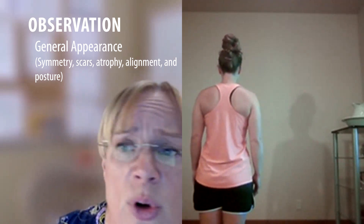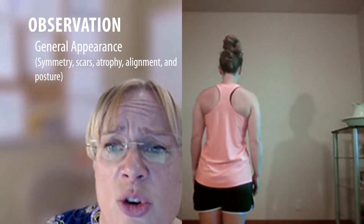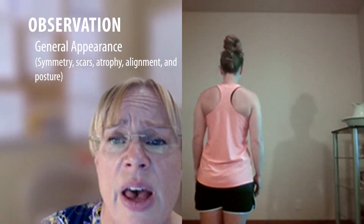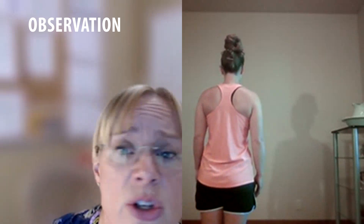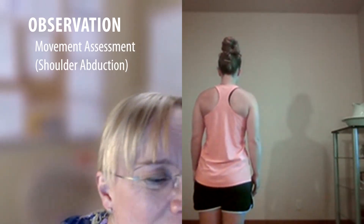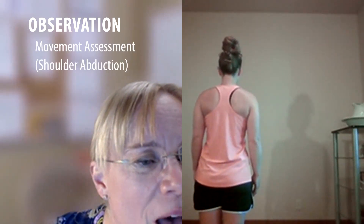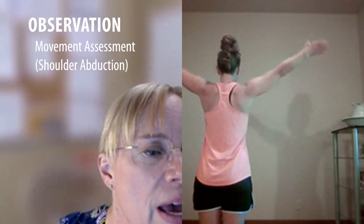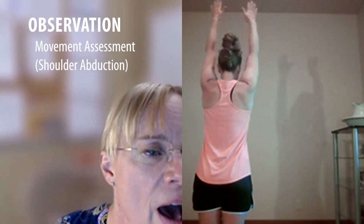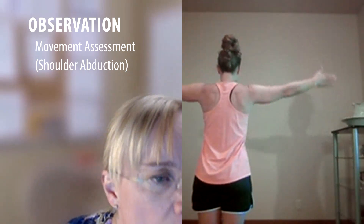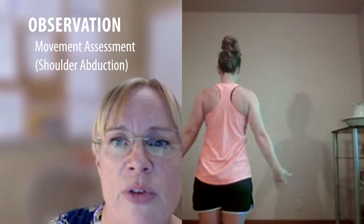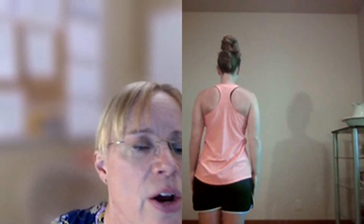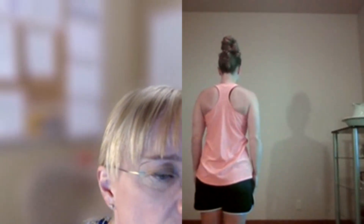Looking for symmetry, scapular winging, and any atrophy. Then we're going to do some shoulder abduction — bring your arms up over your head. I'm looking again at the motion of the shoulders, how they move, and how the scapulae are moving. Perfect. Now go ahead and turn and face me.